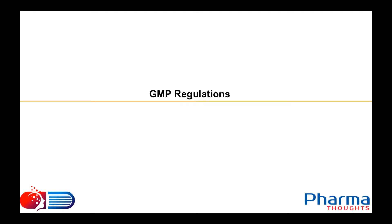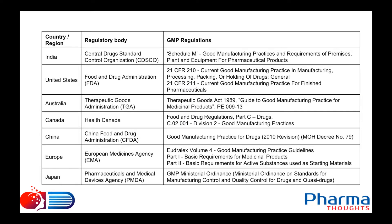Let us see some regulations specific to GMP. Each country has its own individual regulatory authority which controls all aspects related to drugs. In India, CDSCO — the Central Drug Standard Control Organization — is the body responsible for drug regulation. The GMP regulations for India can be found in the Drugs and Cosmetics Act under Schedule M, which prescribes the good manufacturing practices and requirements of premises, plant, and equipment for pharmaceutical products.